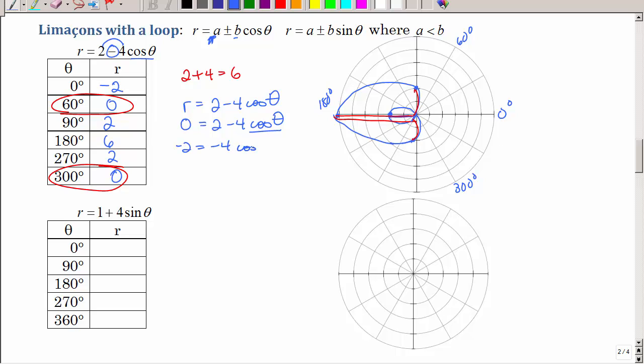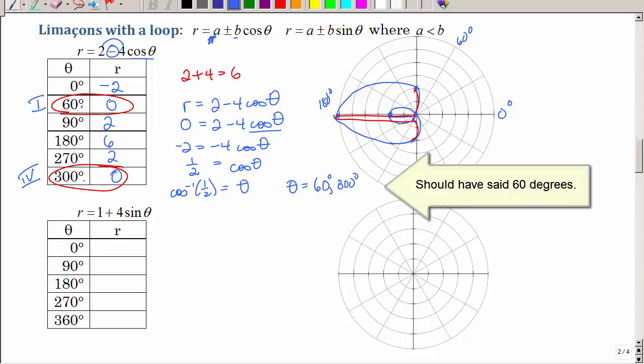So you're solving this equation. If you let r equal 0, how could I solve for cosine theta? Well, I'm going to subtract 2. I'm going to divide by negative 4 and get 1 half. So where all does the cosine equal to positive 1 half? Well, it's in the first and fourth quadrant. And those are the two angles. So theta is the inverse cosine of 1 half. And theta is 30 degrees and 300 degrees. And that's where it went through the pole.